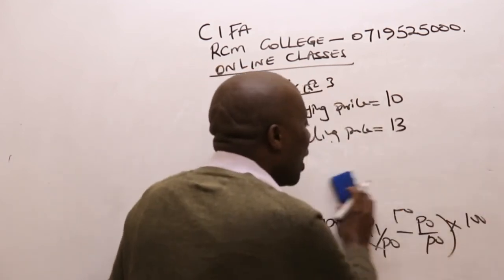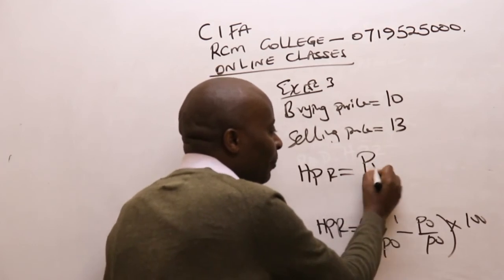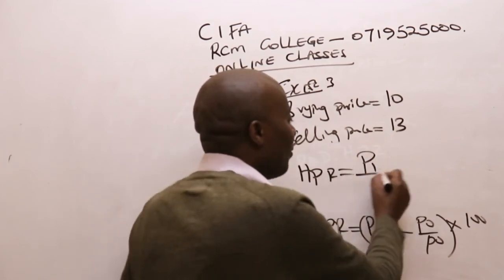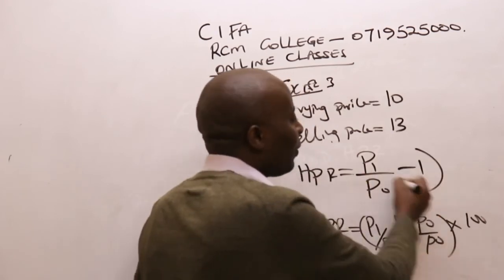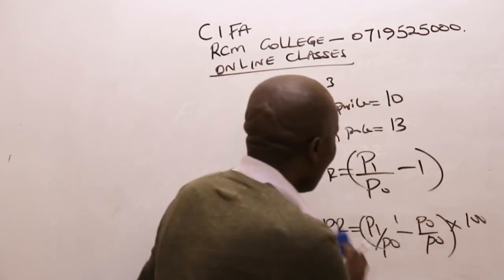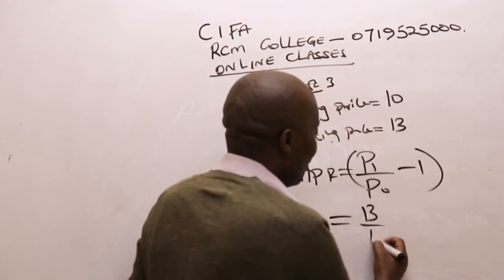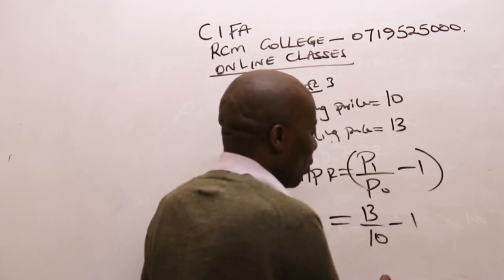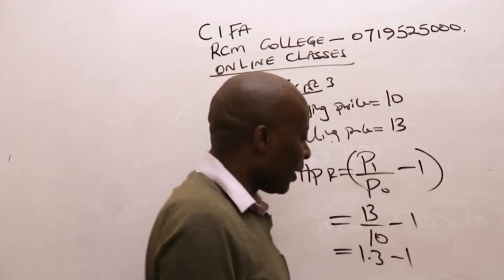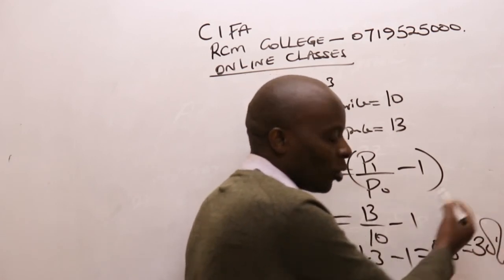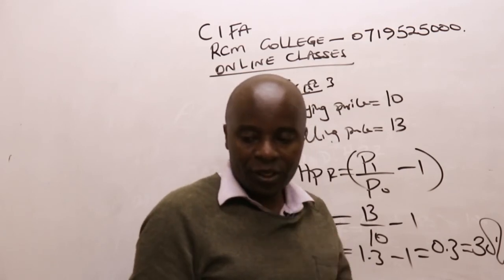There is an important concept here: our holding period return can as well be obtained by taking the price at the end of year one divided by the price at the beginning, minus one, times 100. So we have P1 of 13 divided by P0 of 10, minus one. 13 over 10 is 1.3. So 1.3 minus one gives us 0.3, which at the end of the day gives us 30%. So the holding period return here is 30%.